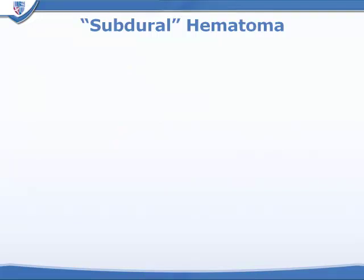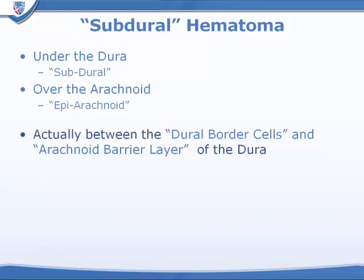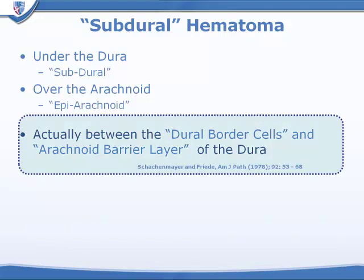Complicated subdural hematomas in association with other lesions are what we usually see as the result of motor vehicle crashes in middle-aged patients. The acute clinical presentation may be the result of other associated injuries rather than from the blood in the subdural space. The subdural hematoma is under the dura and therefore also over the arachnoid. Histologically, it is actually between the dural border cells and the arachnoid barrier layer of the dura — terminology that has been in the literature since 1978.